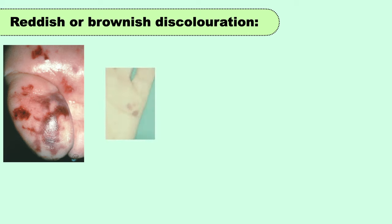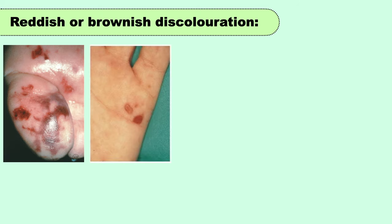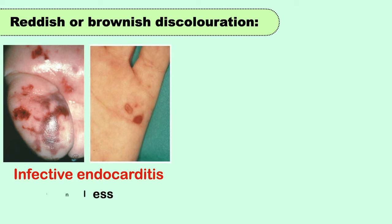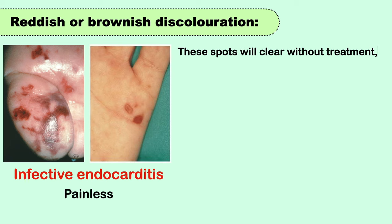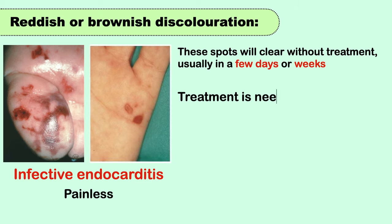You may also find red or brown spots on your palms and soles — this is also seen in infective endocarditis or heart infection. These spots will clear without treatment, usually in a few days or weeks, but treatment is still needed for the underlying infection.